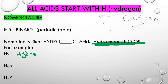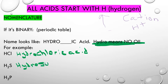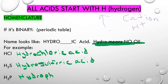We know we have chlorine, so we're going to change that to chloric, and then we always say acid. Again, we only have two elements — hydrogen and sulfur — so we know we're just using the periodic table, no polyatomic ions. So again, we're going to say hydro, and then we know we have sulfur, so it's hydrosulfuric acid. Down here, we have hydrogen and phosphorus, so we just use the periodic table — hydro — and it's phosphorus, so phosphoricacid.